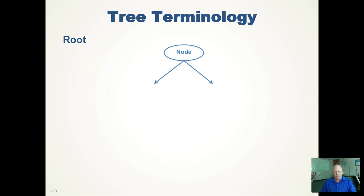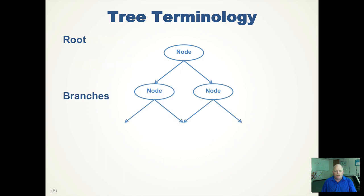I want to talk about basic tree terminology. The root node is the node that has no predecessor — it is the root of the tree. In computer science, all trees grow down, so the root is at the top. In a binary tree, the root could have multiple children. Each branch, left and right or middle, points to a node. A branch can point to null — the left, right, or middle don't have to point to anything.